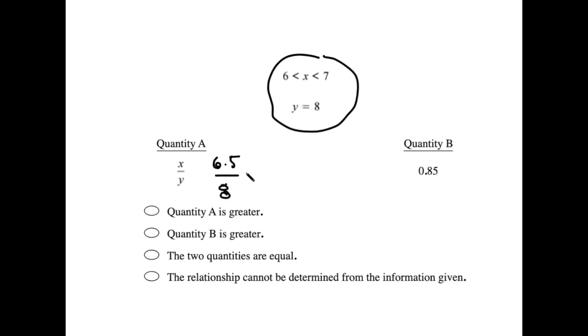y has to be 8. And when I do that, and I use my handy-dandy calculator, I find that it comes out to about 0.81, right? And so we see, okay, b is greater.